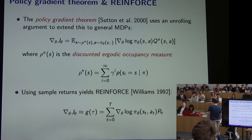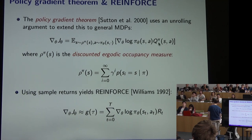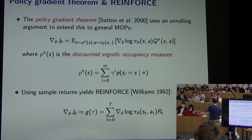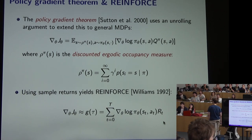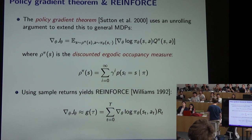In the policy gradient theorem we have a term corresponding to the true value function of the current policy. Of course we don't know that, so we replace it with any unbiased estimate of the value function. The simplest unbiased estimate is the sample return itself, yielding an algorithm called REINFORCE — the first policy gradient algorithm, which actually precedes the policy gradient theorem.